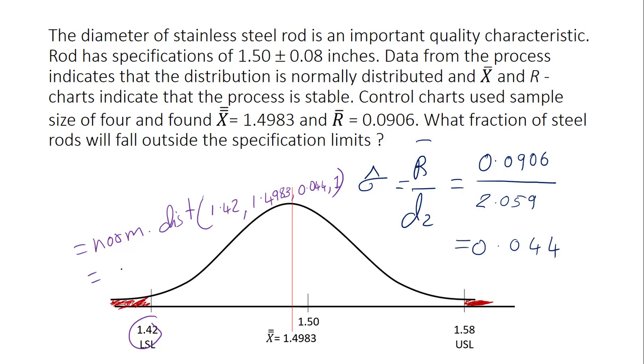Same way you can calculate the area under the curve on the right hand side from the upper specification limit. That has to be 1 minus norm.dist and in the parenthesis you have x which is 1.58, then you have mu 1.4983, standard deviation will be same and then the cumulative part 1.